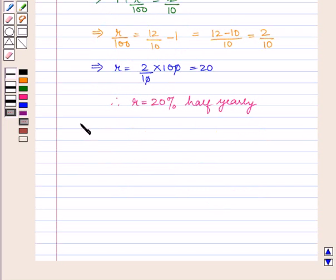Hence the rate of interest is equal to 2 into 20 which is equal to 40% per annum.